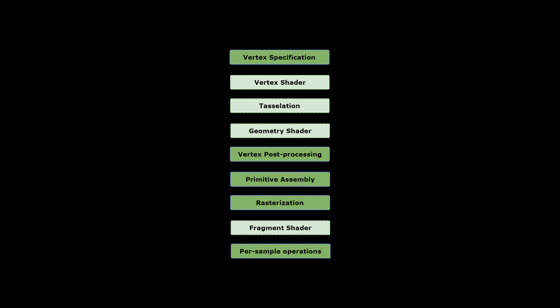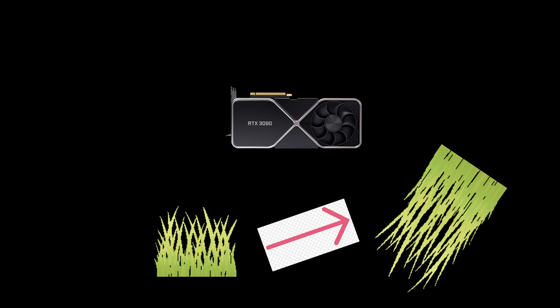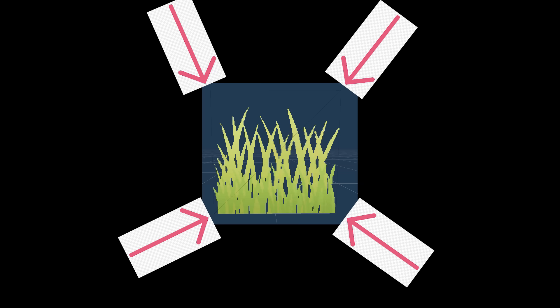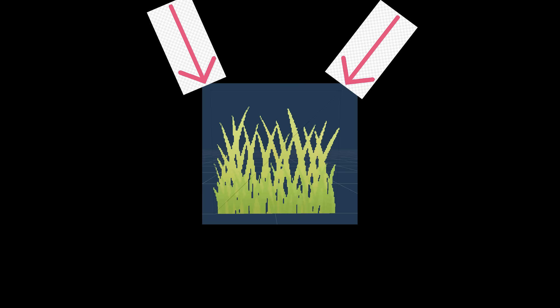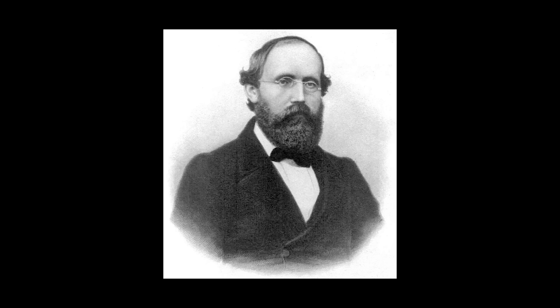Now comes the hard part: animation. Grass is long and thin, so it's susceptible to wind and flows back and forth. We're going to fake it — animation in this context happens in the vertex shader, which finalizes vertex positions, so I can have the GPU modify vertex positions however I please. The problem is that this grass model only has four vertices, and since the bottom two remain stationary, only the top two will move. We'll skew the grass back and forth using trigonometric oscillators.